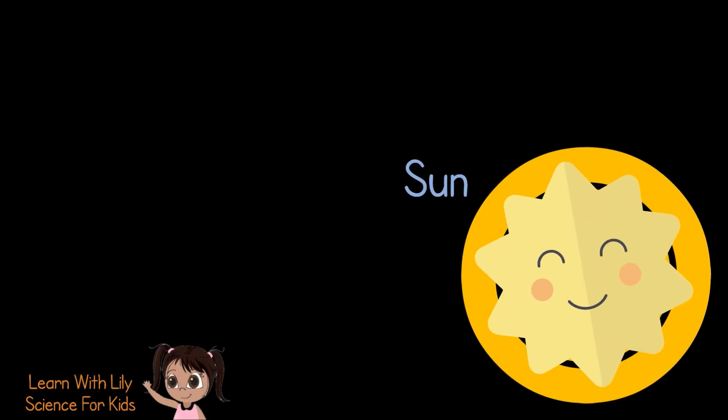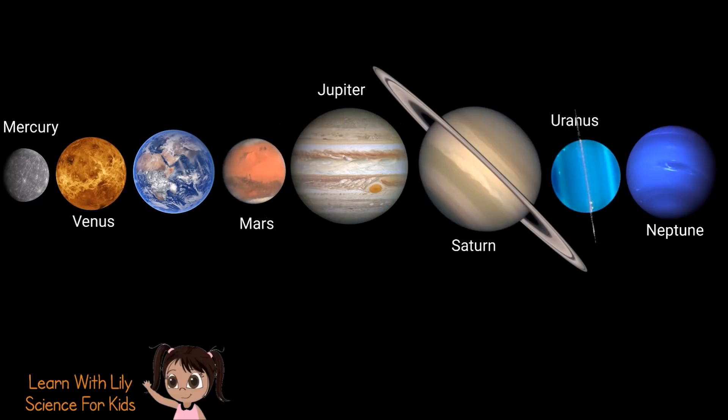We're learning about the solar system. Today we're going to learn about the Sun. There are eight planets in the solar system. Do you remember what they are?